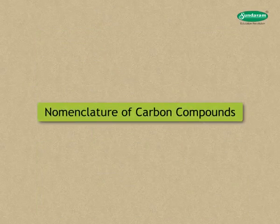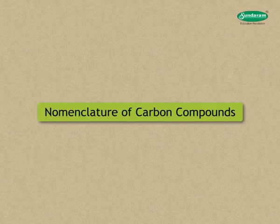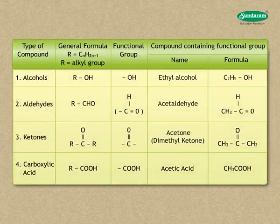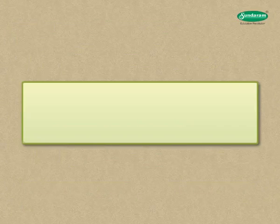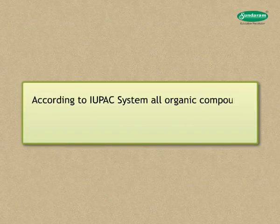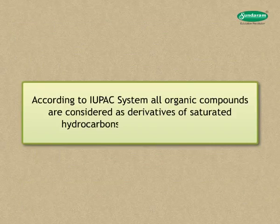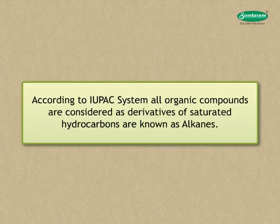Let us look at the nomenclature of carbon compounds. The latest and widely accepted system for giving systematic names to organic compounds is the IUPAC — International Union of Pure and Applied Chemists — system. According to the IUPAC system, all organic compounds are considered as derivatives of saturated hydrocarbons and are known as alkanes.